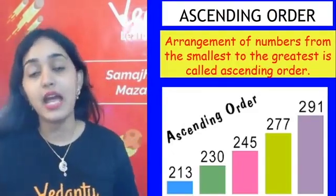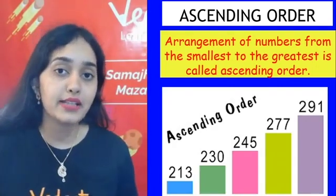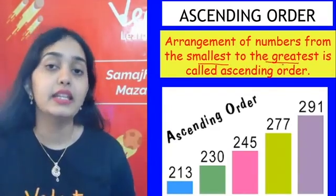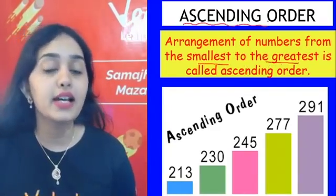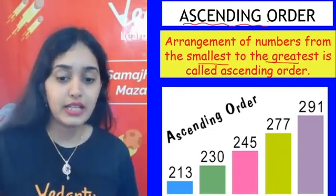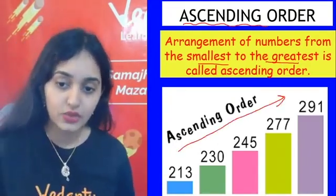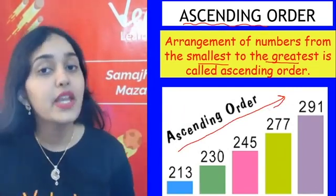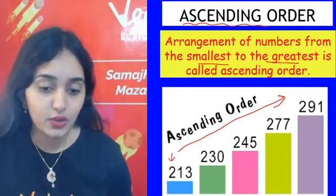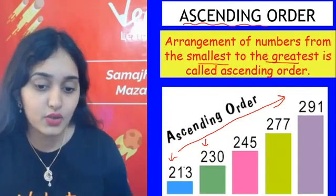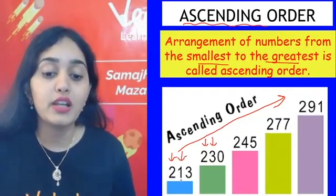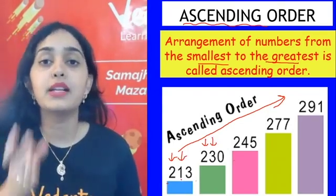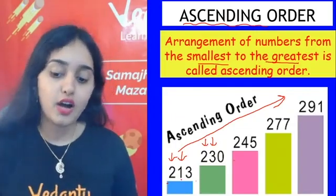Next, we learned about ascending and descending order. What is ascending order? If we arrange numbers from smallest to greatest, that order is called ascending order — chote se bada. To compare, we start with the first digit. If two digits are the same, we move to the next digit. For example, comparing 213 and 230: the first digits are the same (2 and 2), so we compare the next digits — 1 is smaller than 3, so 213 is less than 230.